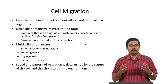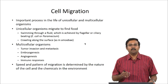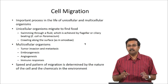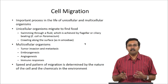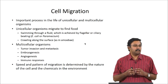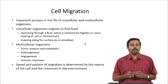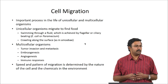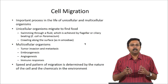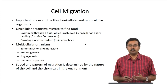Cell migration is in general a very important process for both unicellular and multicellular organisms. For a unicellular organism, it is usually for finding food — the cells migrate, they usually swim through a fluid trying to find nutrients, or they can crawl on a surface as an amoeba would do. Multicellular organisms also do cell migration, but for more complicated processes — not just for finding food. It could be for tumor invasion, metastasis, embryogenesis, angiogenesis, or immune responses.